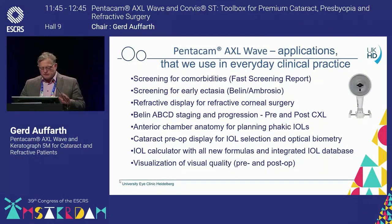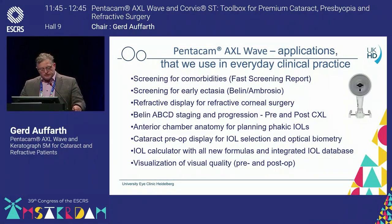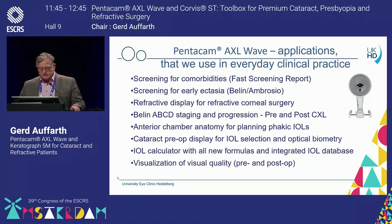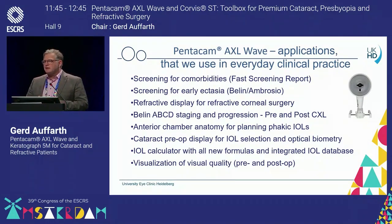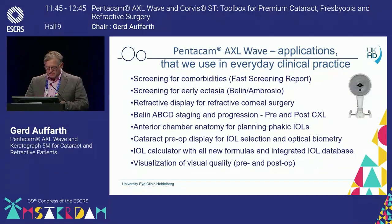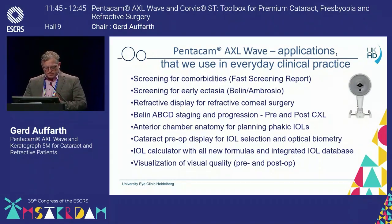All these things are here: comorbidities, early ectasia, refractive display for corneal refractive surgery, the BELINE ABCD staging and progression for pre and post cross-linking patients. But also anatomy of the anterior chamber, if you want to put in a phakic IOL, if you want to do IOL calculation — all the modern formulas including the Barrett and other things — and also things for a post-LASIK patient. Everything is included here.